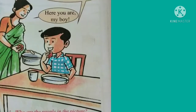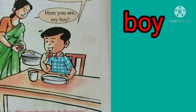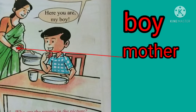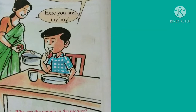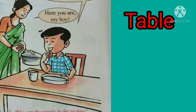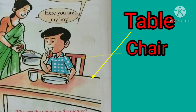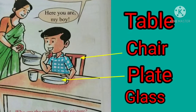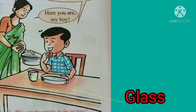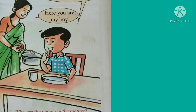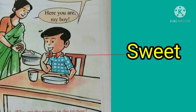Now look at this picture. Who are there in the picture? One boy sitting in the chair and his mother serving food to him. What things do you see in this picture? A table, chair, plate, glass. Guess what the boy is eating. Yes, it's a sweet. Maybe it is a halwa.